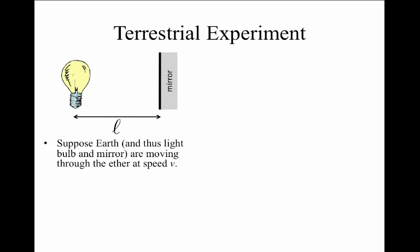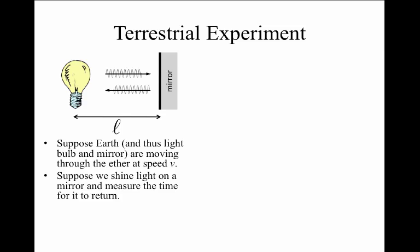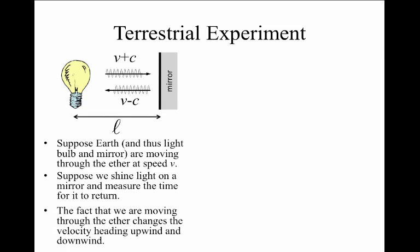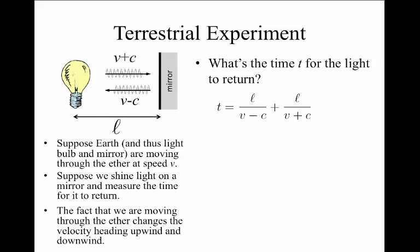In the experiment, we again suppose that Earth, thus the light source and the mirror, are moving through an ether at speed v. If we shine the light from the light source onto the mirror and then it reflects back, we can measure the time for it to make the outbound and return flight. Because the whole system is moving at speed v through the ether, then the light going upstream will be traveling at speed v plus C and the light stream heading downstream will be traveling at speed v minus C. When we try to make a measurement, we are measuring the time for the light to go out and return. This time will be equal to L over V minus C plus L over V plus C.